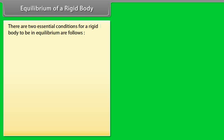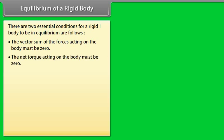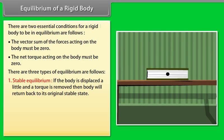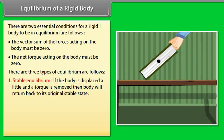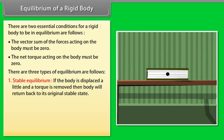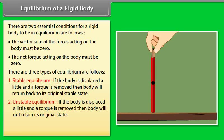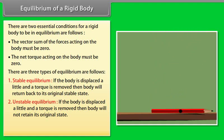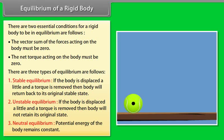There are two essential conditions for a rigid body to be in equilibrium: the vector sum of all forces acting on the body must be zero, and the net torque acting on the body must be zero. There are three types of equilibrium: (1) Stable equilibrium — if the body is displaced slightly and the torque is removed, it returns to its original state. (2) Unstable equilibrium — if displaced and torque removed, it does not return to its original state. (3) Neutral equilibrium — the potential energy of the body remains constant.